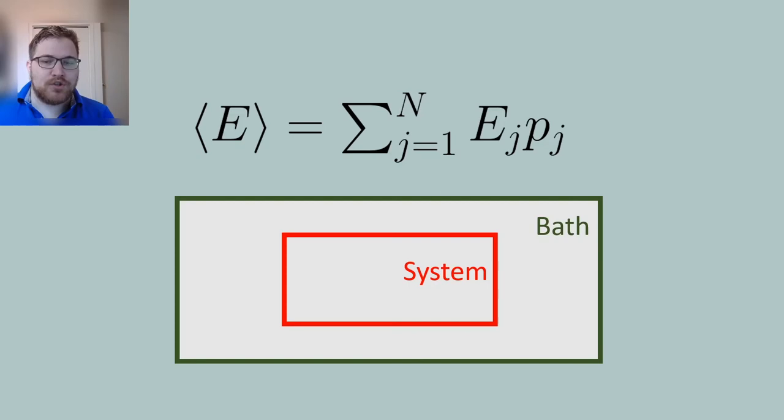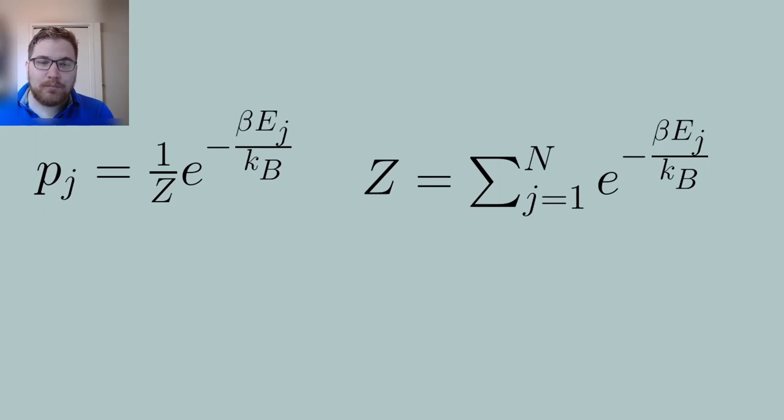An example situation where we only know the energy on average would be embedding our system of interest inside a bath of energy that is much bigger. The bath and the system would then exchange energy, making it difficult to determine the precise energy of our system. An example of a bath could be for example the air in your room, while a much smaller system might be some object in your room.